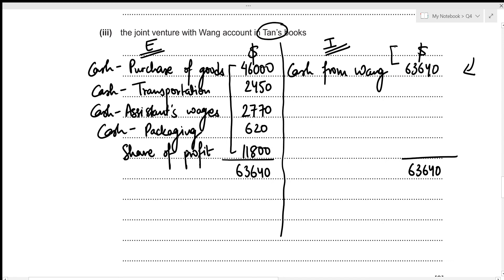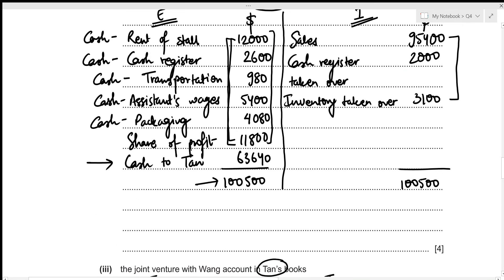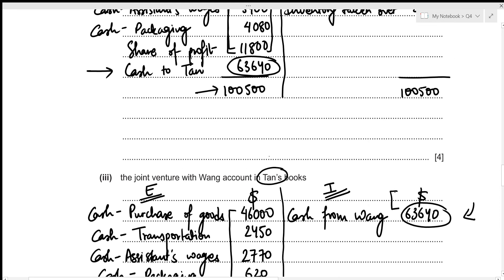We can verify our joint venture accounts: the amount yet to be received by Tan from Wang is 63,640, and the amount owed by Wang to Tan is also 63,640 — they match, confirming the accounts are correct. This completes the entire second part of the question.